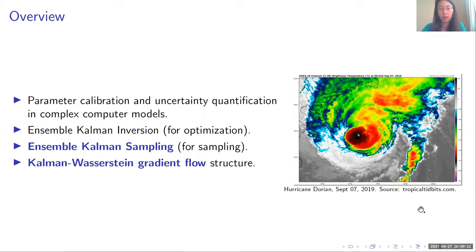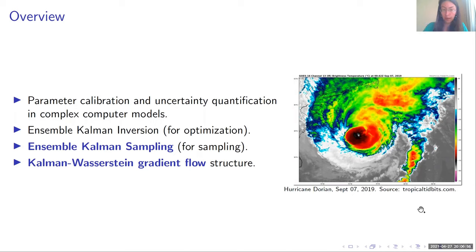I want to focus on two different approaches. One is the ensemble Kalman inversion methods, which are ways of optimizing — so this gives you a way of doing parameter calibration. Then what we introduced is the ensemble Kalman sampler, which is a new method for sampling a given probability distribution, which in this setting will be the posterior distribution of the inverse problem connected to the uncertainty quantification problem. We propose this sampling algorithm because of an underlying gradient flow structure, which is not the classical Wasserstein-2 gradient flow but rather a generalization we call the Kalman-Wasserstein gradient flow.